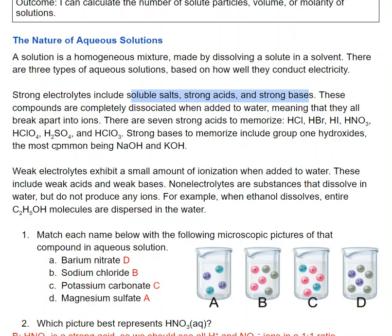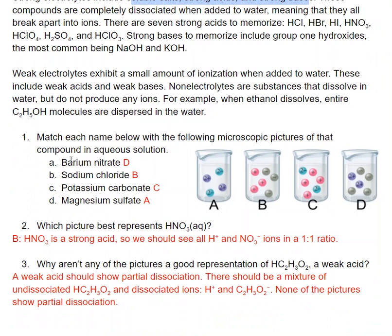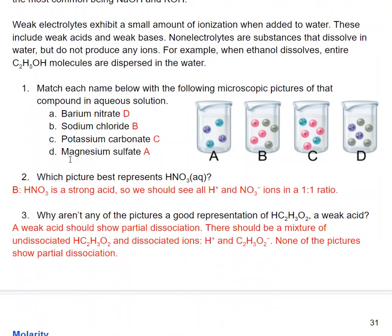We're going to match each name to these pictures showing the compound in aqueous solution. For barium nitrate, barium is Ba and has a plus two charge. That means nitrate, since it has a minus one charge, I'm going to need twice as many nitrates as bariums. So that best matches picture D. We see we have four nitrate minus ones and two barium plus twos.